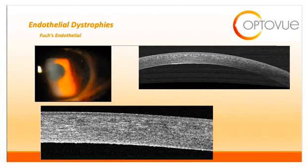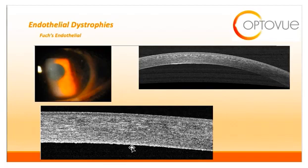Last, we have the endothelial dystrophies. The first is Fuchs. Fuchs will appear with corneal gutata and central stromal edema. On OCT, you will see nodular formations of the posterior corneal endothelium, endothelial gutata, and increased corneal thickness.